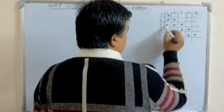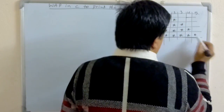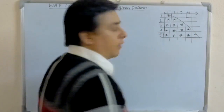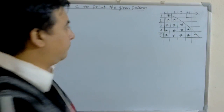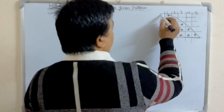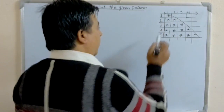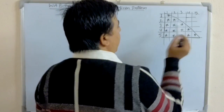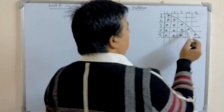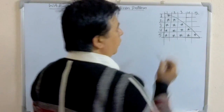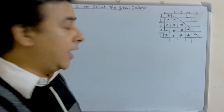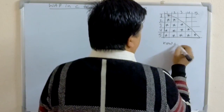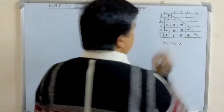We have to print the pattern in the format of a right-angle triangle. In the first row, we print one asterisk sign. In the second row, there are two asterisk signs. In the third row, three, in the fourth row four, and in the fifth row there are five asterisk signs. It means that in every row there are equal numbers of asterisk signs.